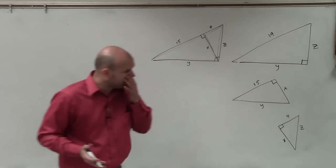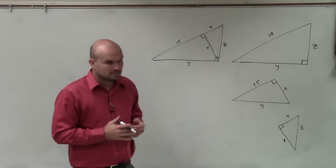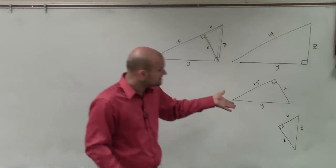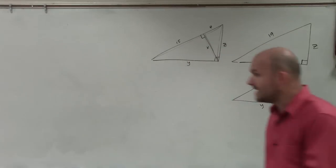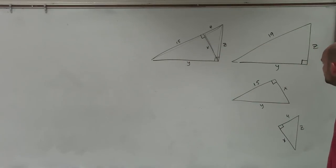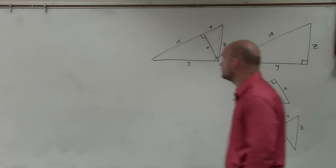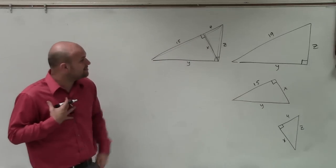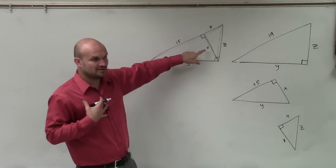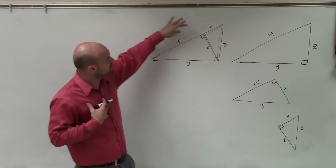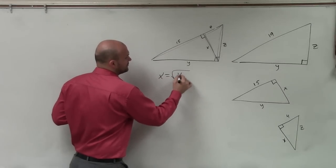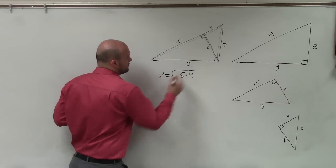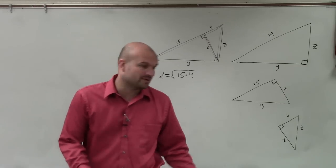So what we're going to do is they want us to solve for x, y, and z. Now, we can use the geometric mean to do that, or we could also use ratios to solve the ratios and proportions. The best thing that I remember, if you guys remember to find the altitude of a triangle, all you need to do is find the geometric mean of these two values. So I can say x equals the square root of 15 times 4.